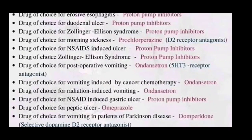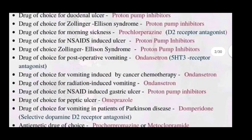Drugs of choice for morning sickness is prochlorperazine, which is a D2 receptor antagonist. Drugs of choice for NSAID-induced ulcer is proton pump inhibitor — NSAID stands for non-steroidal anti-inflammatory drug. Drugs of choice for post-operative vomiting is ondansetron, which is a 5-HT3 receptor antagonist.